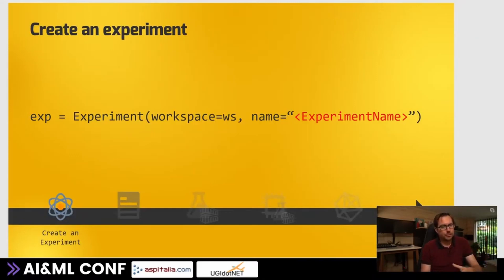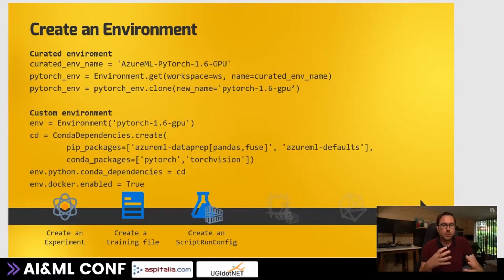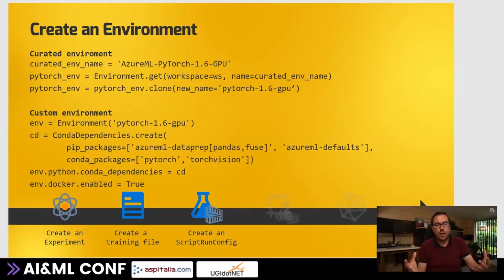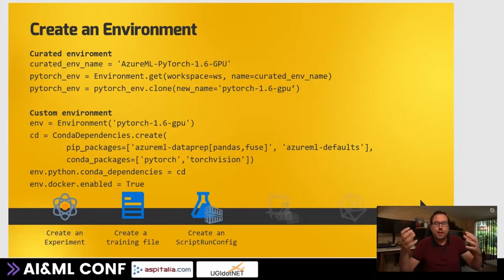Next up is training our model. We've created a workspace, compute, and storage, and created a dataset - now it's time to experiment. The first thing we need is to create an experiment and connect to it. Then we need the actual file that will do the training - I've taken a sample file from the PyTorch website and run it as-is. Then we need to create a script run configuration. The training file has to run in an environment, and we are the ones who configure that environment. There are two ways: you can pick up a curated environment managed by Microsoft - for example, AzureML-PyTorch-1.6-GPU - or you can create a new environment from a plain image and install pip packages.